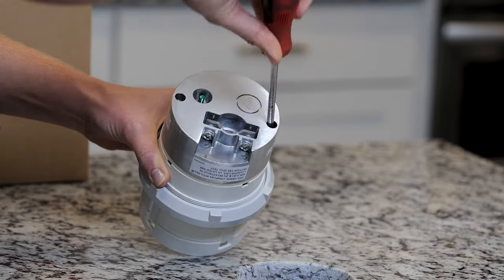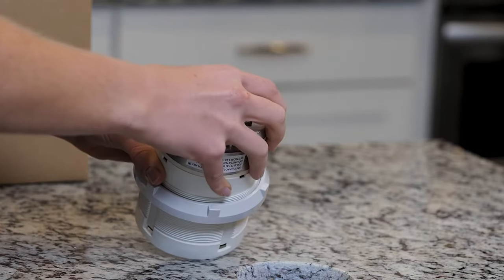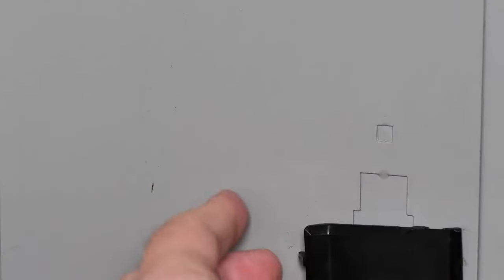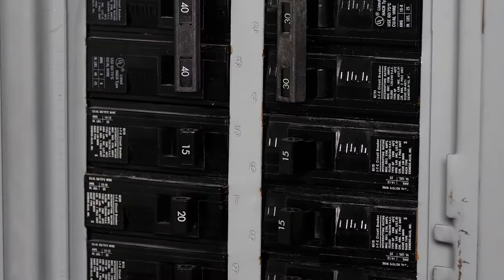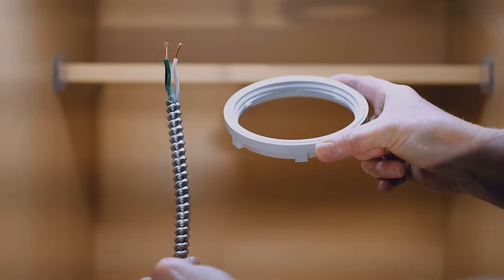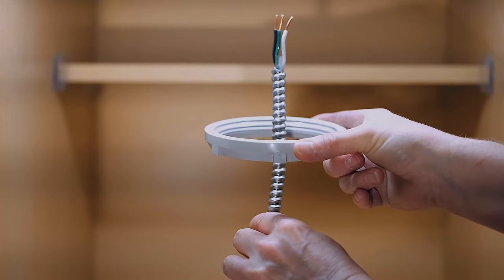Remove the base from the housing to expose screw terminals. Before handling the cable, make sure the circuit is off. Feed the cable through the lock nut under the countertop, as this will secure the device later.